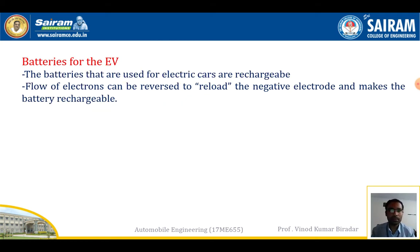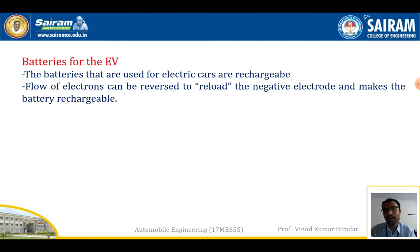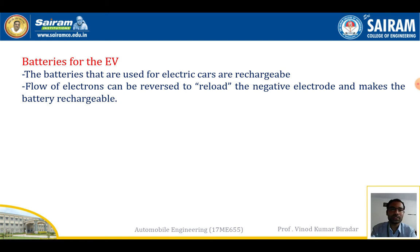The battery plays a major role in the electric vehicle. The main function of the battery is to store energy — it is rechargeable. The flow of electrons can be reversed to reload to the negative electrode, making the battery rechargeable. The battery can store energy up to around 12 volts depending on capacity. From the battery, the energy is transferred to the motor, and from the motor the power is transmitted to all wheels via a transmission gear system.